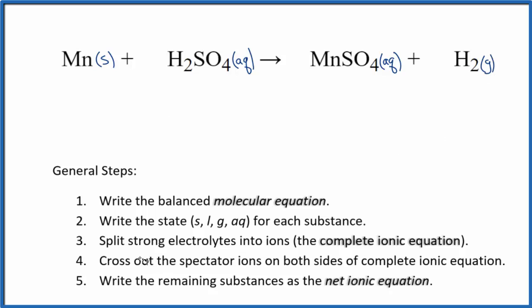So we have our states. Now we can split the strong electrolytes into ions for the complete ionic equation. We won't split manganese apart. It's just a solid. Let's write the states at the end. And then hydrogen, group 1 on the periodic table, that'll be 1 plus, we have 2 of them.